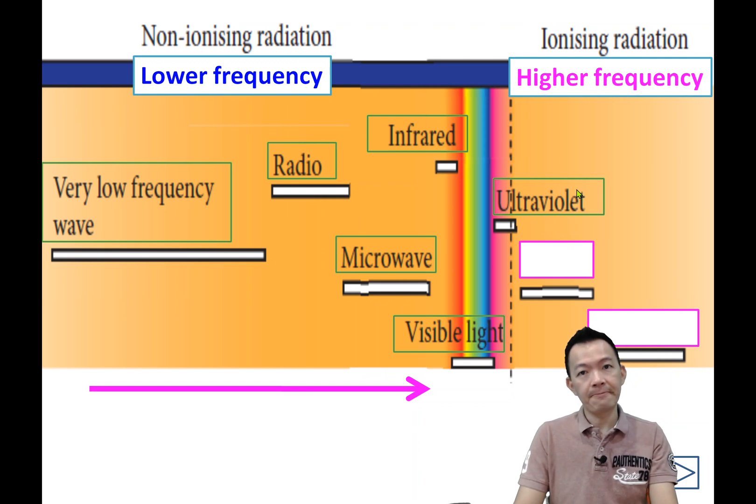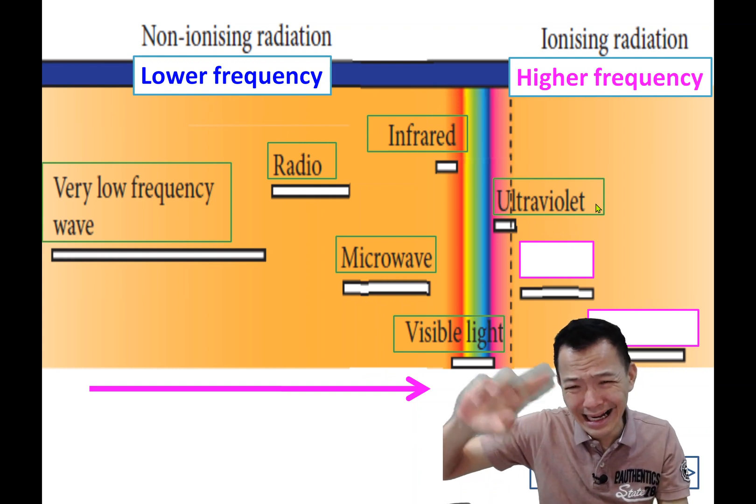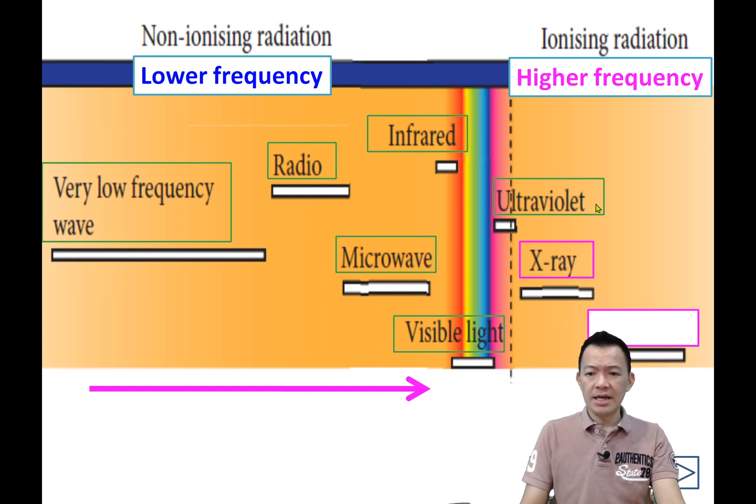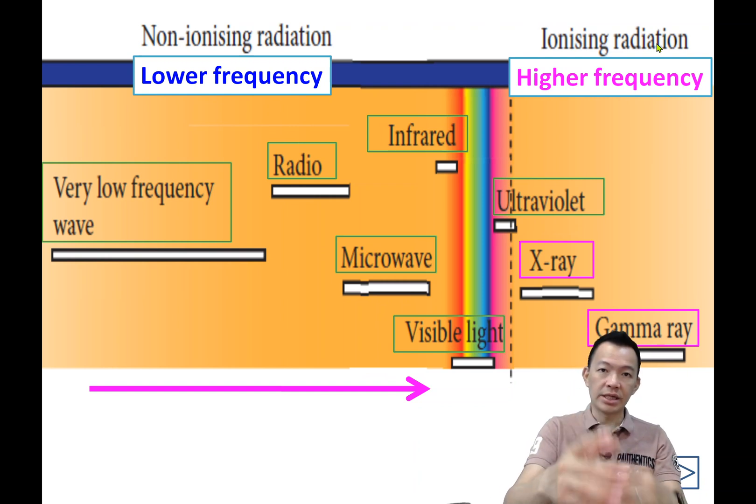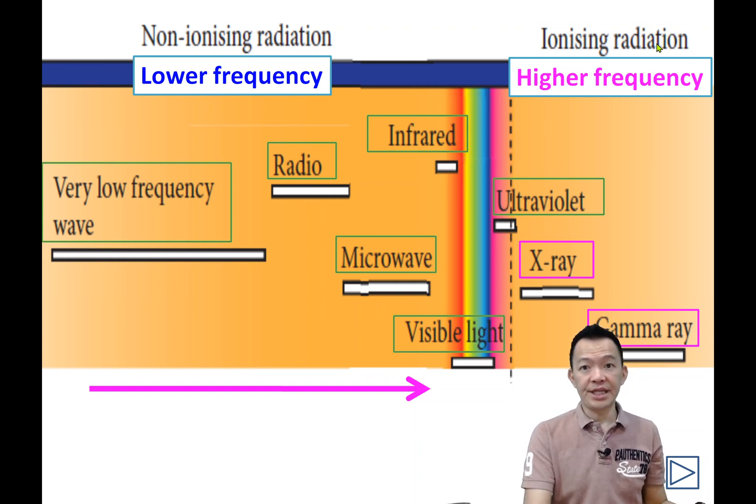But after this will be more dangerous. There will be ionizing radiation. Ultraviolet, X-ray, and after X-ray, gamma. Ultraviolet, X-ray, and gamma, they are ionizing radiation. They can create ions, transforming your atoms into ions. So it may harm your body.